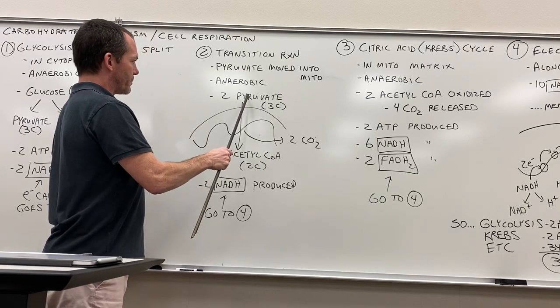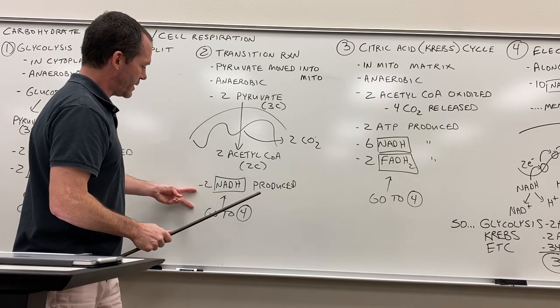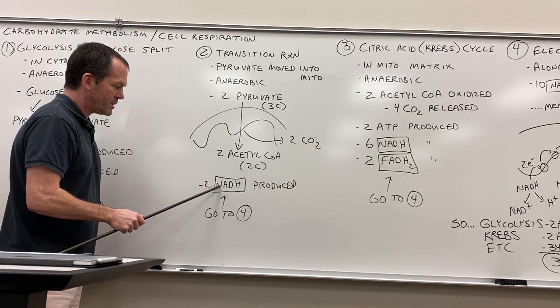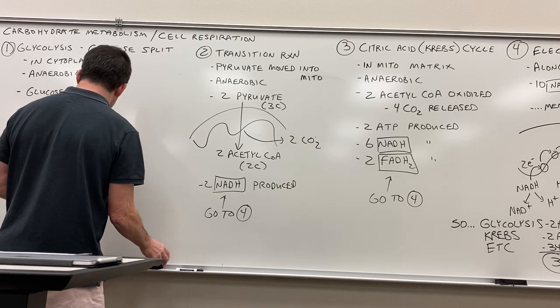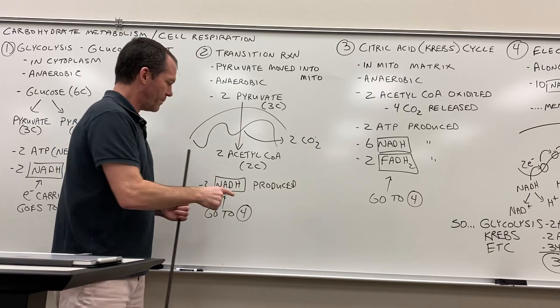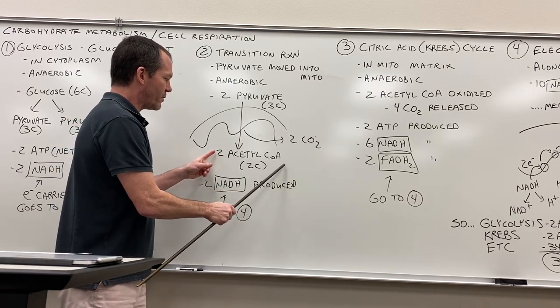Let's go back to this. Two pyruvates are moved in, forming two acetyl-CoA. Show me the money here—we're going to make two NADH. Good to go. Where do they go? Go to step four, deal with them later.